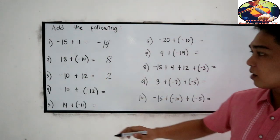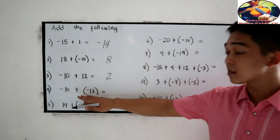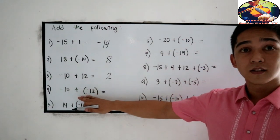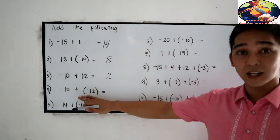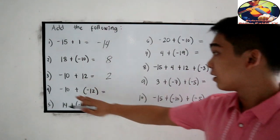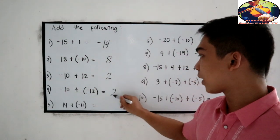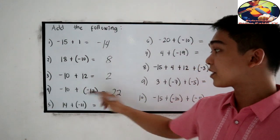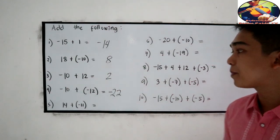Next, number 4. Negative 10 plus negative 12. Both are negative. So add the numbers. 10 plus 12, that is 22. Their sign is negative. So copy the sign. Negative 22.